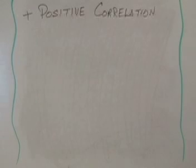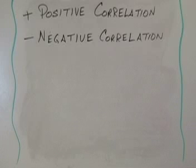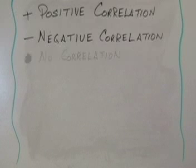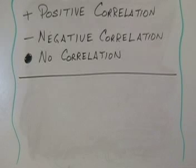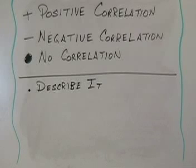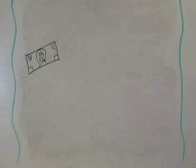Now let's look at what we covered here. We talked about positive correlation — for example, your bank account, where as the amount of time increases, the amount of money in your bank account also increases. We talked about negative correlation — your friend's bank account, where as the amount of time increased, the amount of money in the bank decreased. And then we talked about no correlation, where we don't see any relationship between the two things that we measure. Try talking to a friend and see if you can describe positive correlation, negative correlation, and no correlation. Then see if you can draw them, and give them an example of each type. If you get into trouble or start to forget, just remember the examples we made with your bank account.